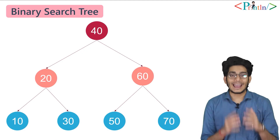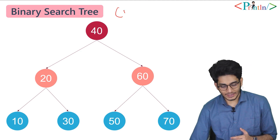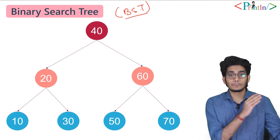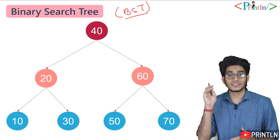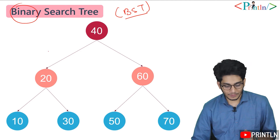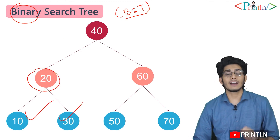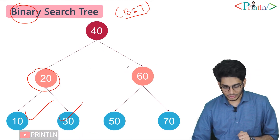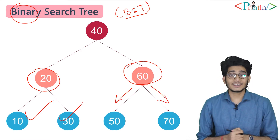So what is basically a binary search tree, or BST? Binary means the tree must have only two child nodes — every node can have only two child nodes. So let's say that this is a node, and every node has two child nodes. Binary search tree has some other properties as well.